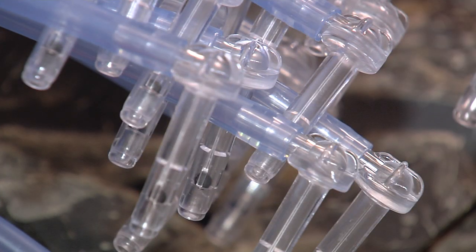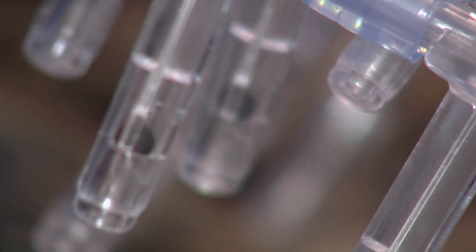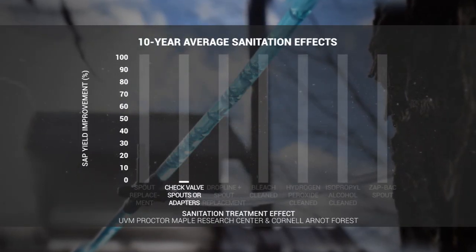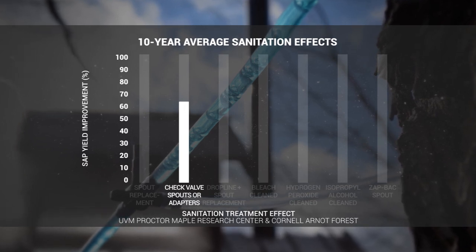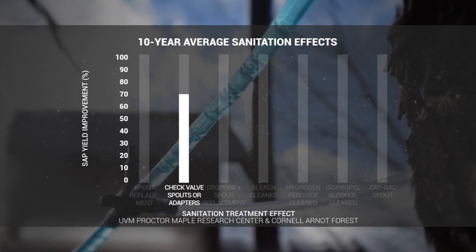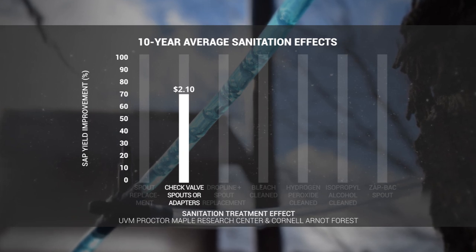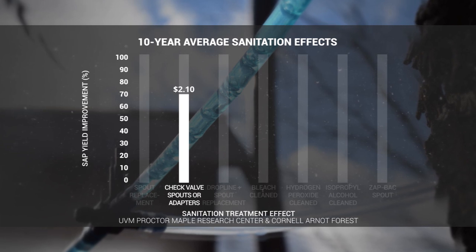Another possible approach is to use check valve adapters or spouts. These prevent sap from moving back into the taphole. Producers who use check valves get the new spout effect because of their yearly replacement. Check valves produce a nearly 70% improvement in sap yield compared to reusing unclean spouts, with a net economic benefit averaging $2.10 per tap.